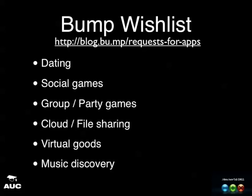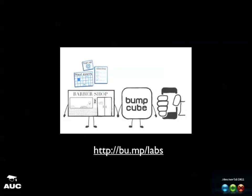They've also recently released information on the Bump Cube — the idea of embedding Bump technology in physical devices at particular locations. You can't develop for it yet, but the idea is placing them at businesses like restaurants. As a patron you could bump the cube to get the upcoming events, a copy of the menu, or sign up for a newsletter. Examples on their website include tracking ping pong games and even one that pours you a beer and adds it to a scoreboard.